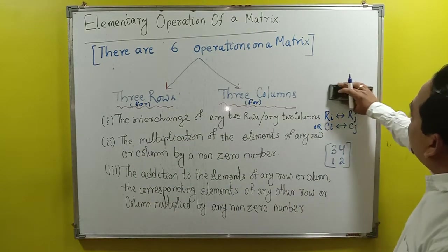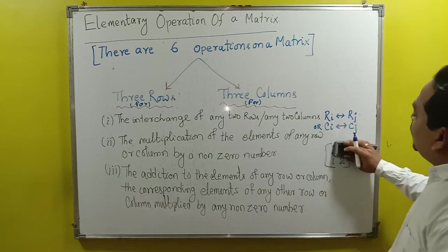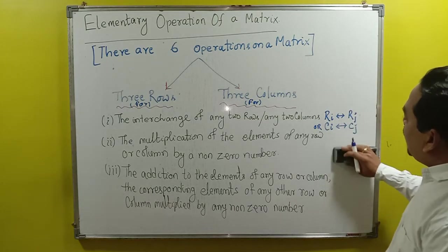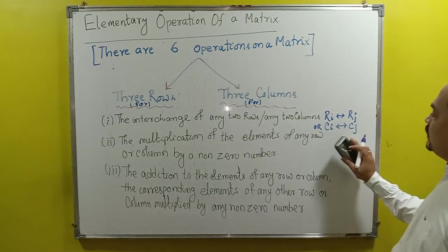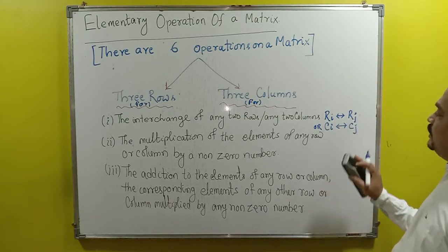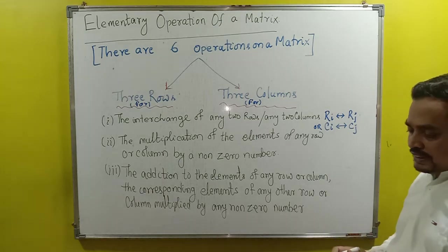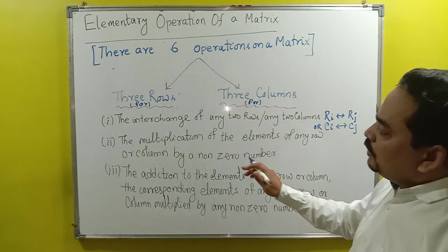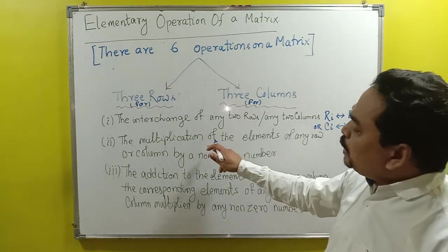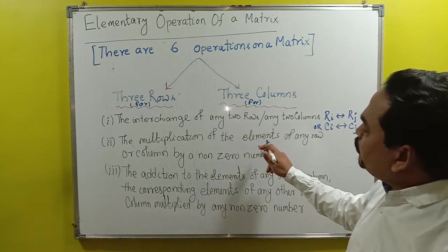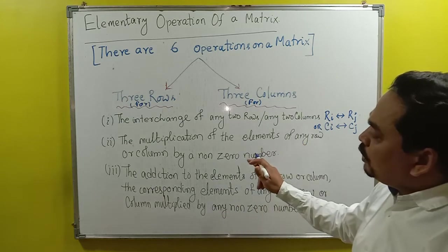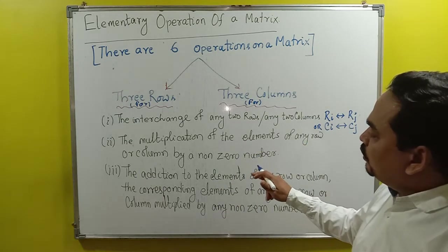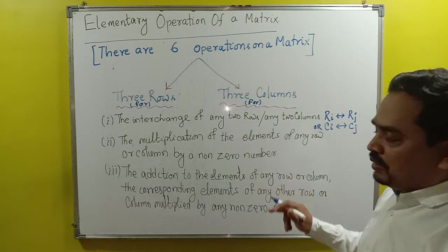This is the first operation — R_i interchange with R_j, or C_i interchange with C_j. The second operation is the multiplication of the elements of any row or column by a non-zero number.